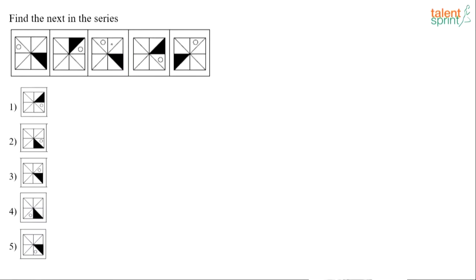Find the next in the series. This is a figure series question — you have to find out what comes next in the sequence. Now observe the position of the circle. The circle was here. From figure 1 to 2 to 3 to 4 to 5, how did it move? Here is the circle — try to gauge the movement of the circle. So what happened from 1 to 2?